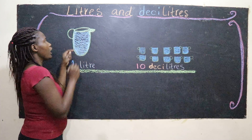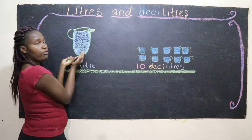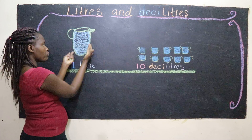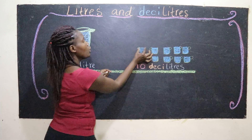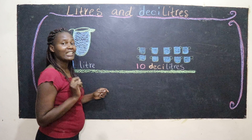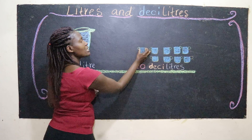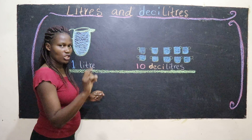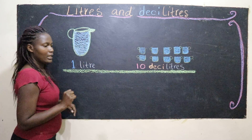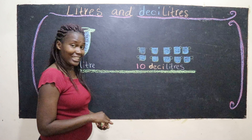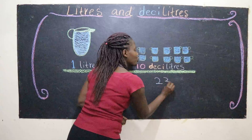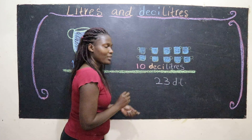You can see how big the amount of 1 liter is compared to just 1 deciliter, because if all these cups together make 10 deciliters, then it means one small cup is just 1 deciliter.